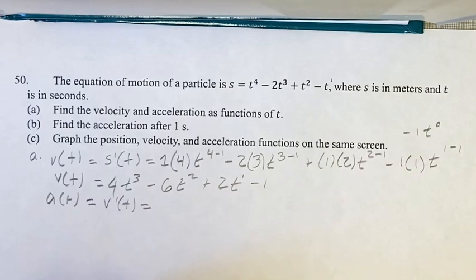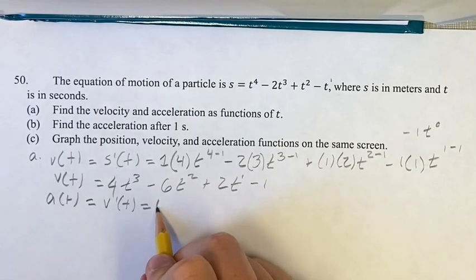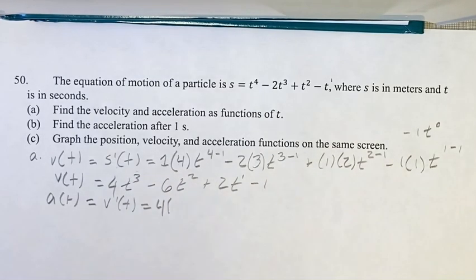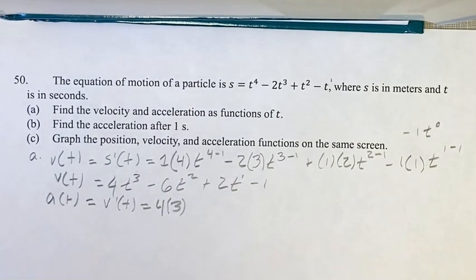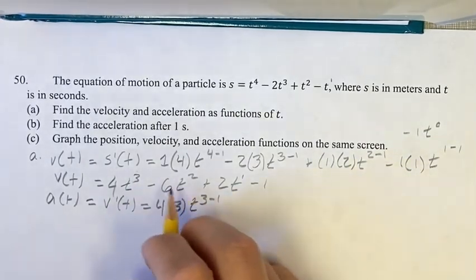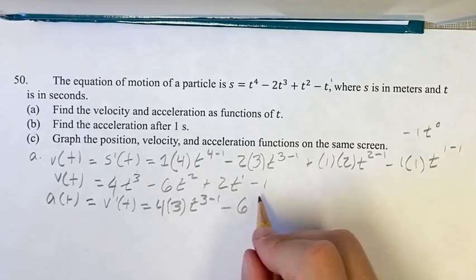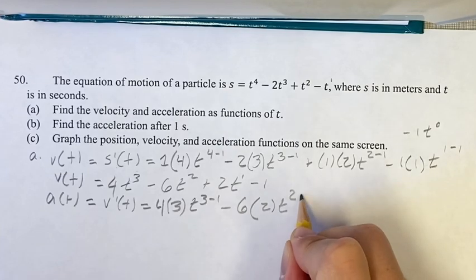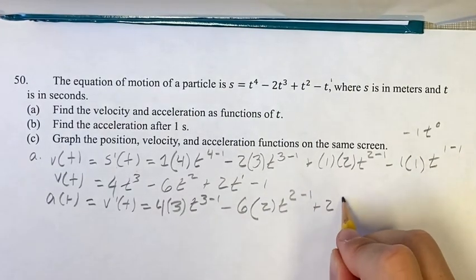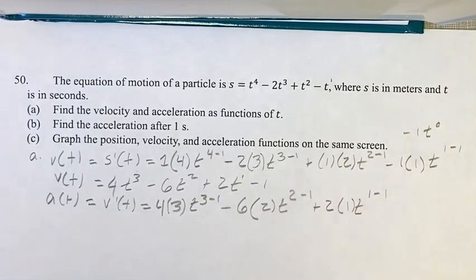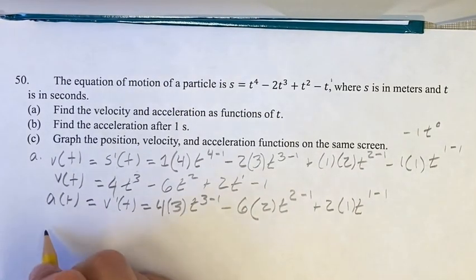And going with this term, we have the coefficient out in front times the exponent with t to your new exponent, three minus one. Repeating this, minus six is your new coefficient. Exponent is two, t to the two, your old exponent minus one. Plus two times one being your exponent, times t to the one minus one. And then the derivative of a constant is just zero, so we can ignore that. There would just be a plus zero at the end which we don't really have to worry about.